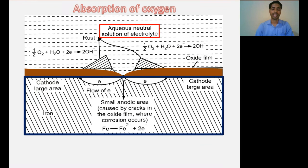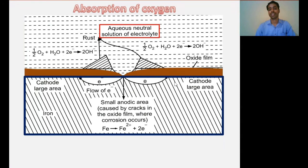As we discussed earlier, the metal part which is directly in contact with the surrounding electrolyte solution will always behave as anode, and the rest of the part will behave as cathode. The larger part which is coated with the oxide film, and hence not directly in contact with the electrolyte solution, will behave as cathode.